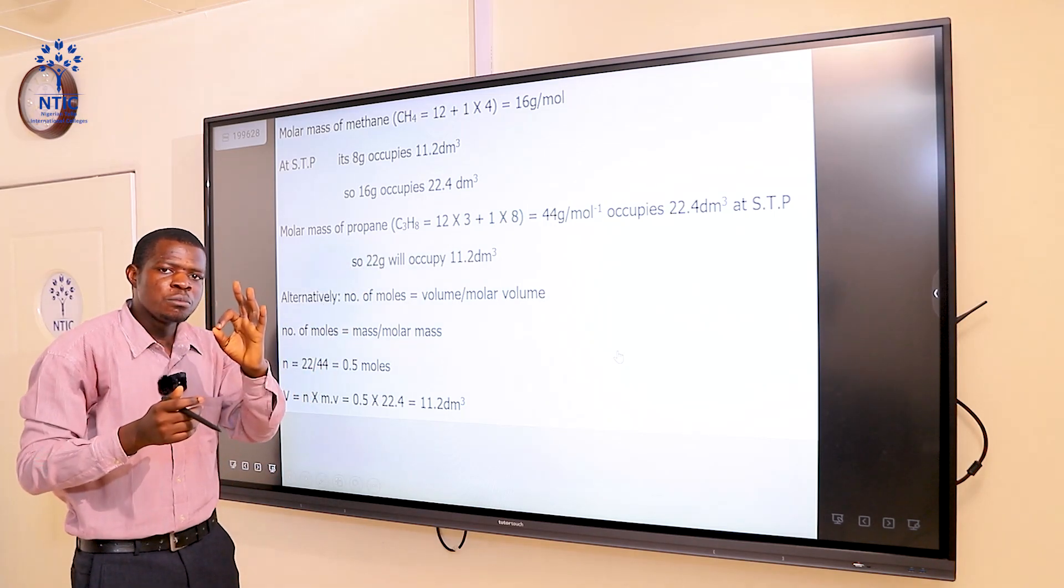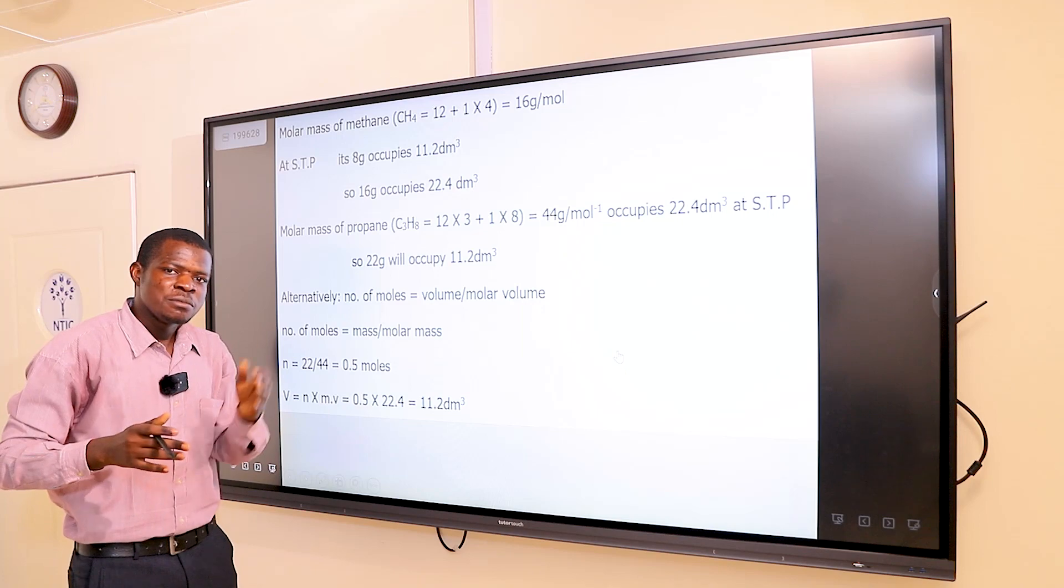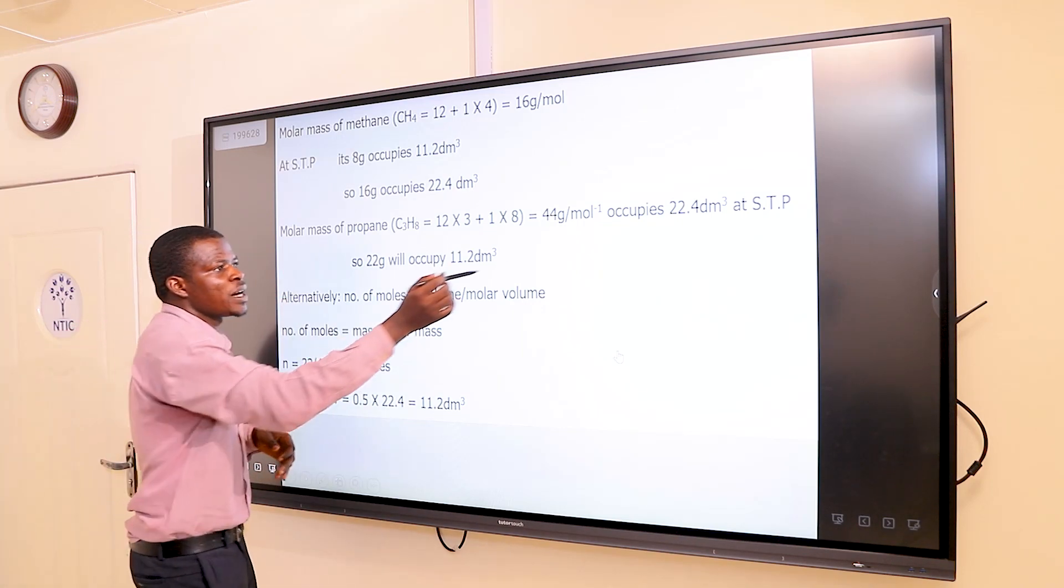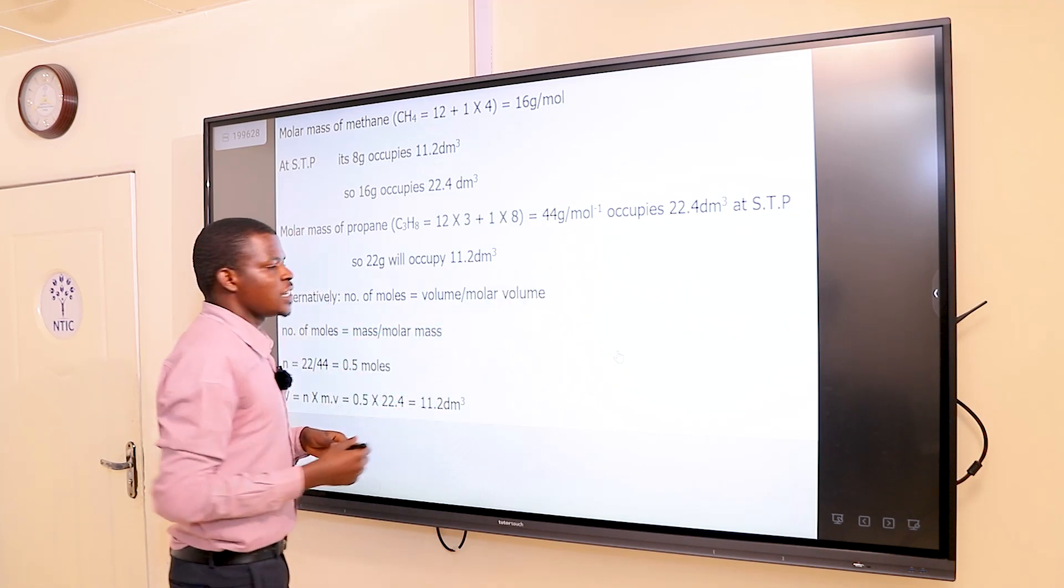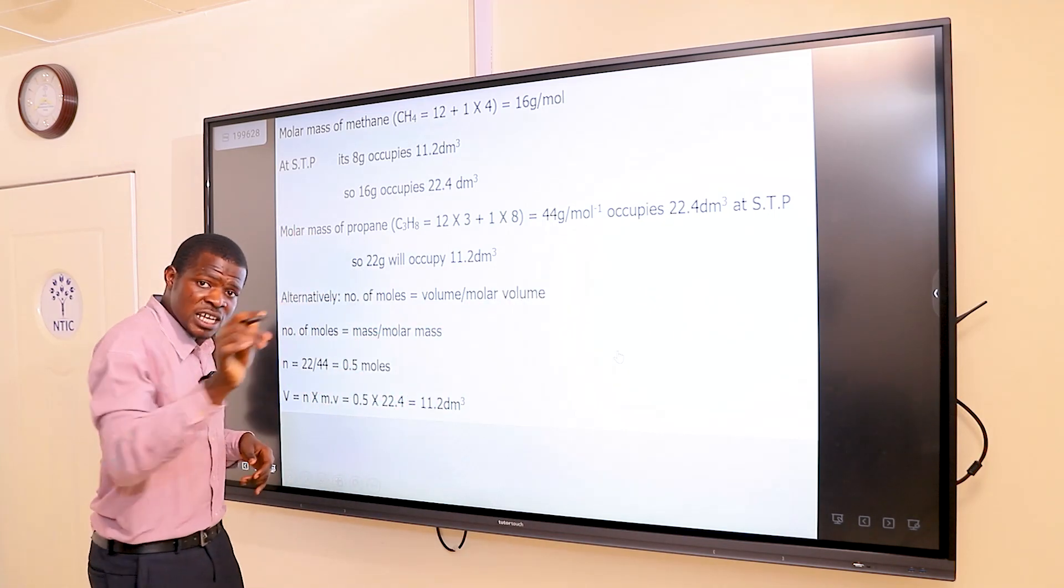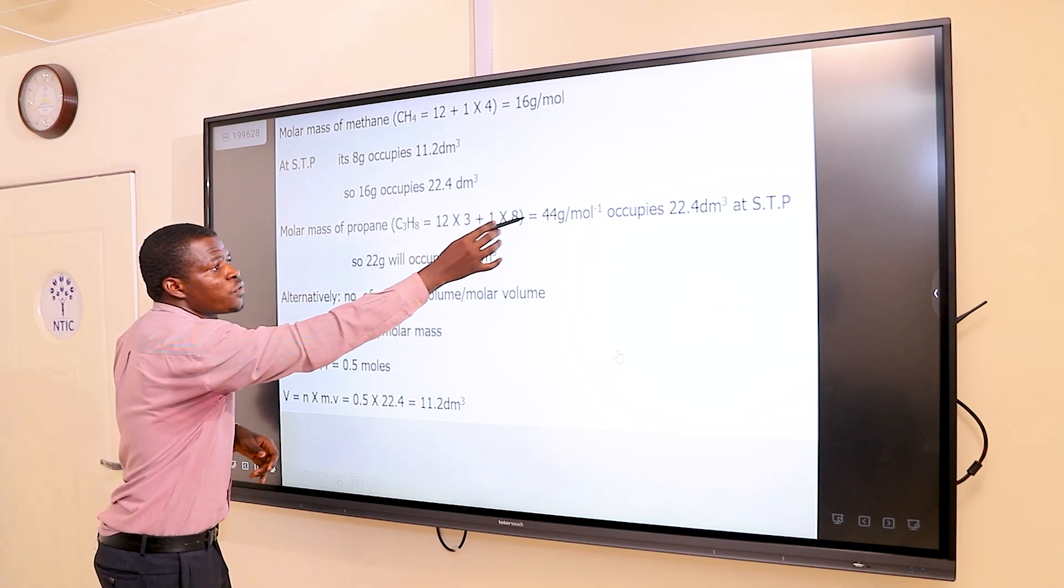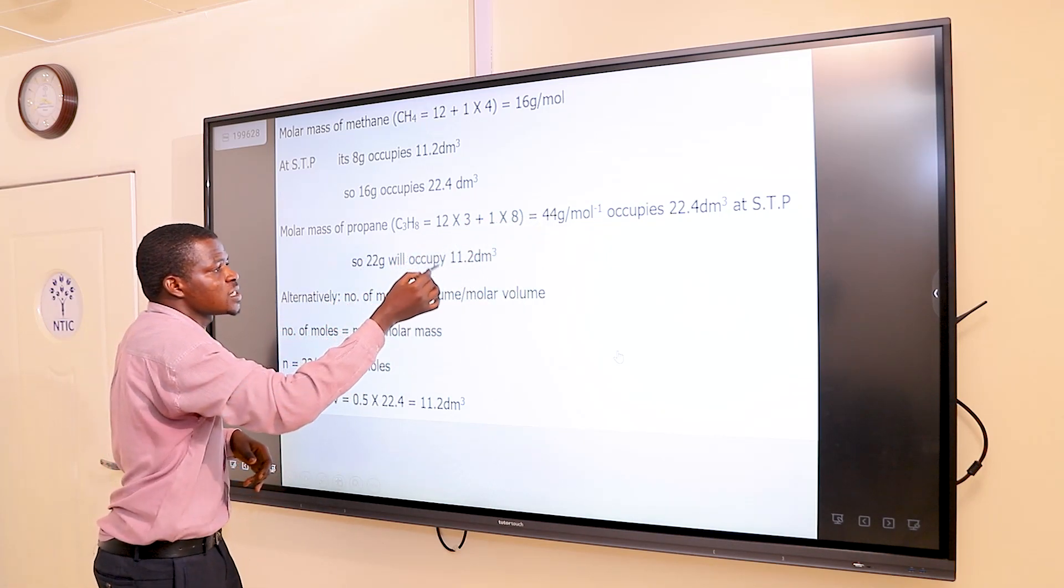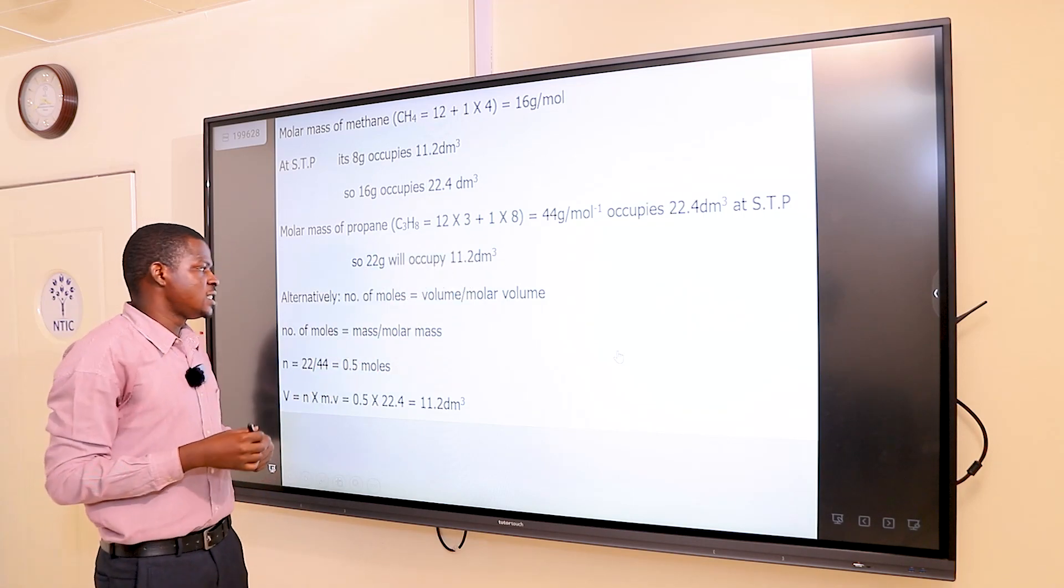Remember what I just said: one mole of a gas occupies 22.4 dm³. What if I'm now having 22 grams instead of 44? It will be half of 22.4, which is obviously 11.2 dm³.